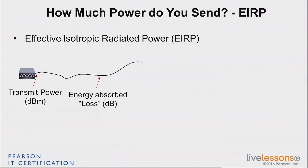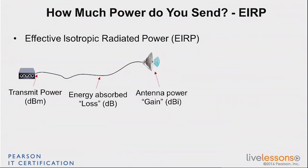Then of course you have the antenna — we'll talk more about that in the antenna chapter — but that antenna has a gain that is measured. We are going to use the dBi scale, never the dBd. dBi scale always. So that antenna has what we call a gain measured in dBi. Keep in mind that the transmit power of the access point is in dBm, not in milliwatt — we convert that to dB already.